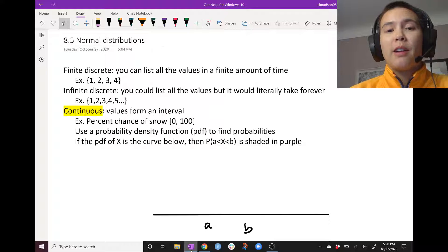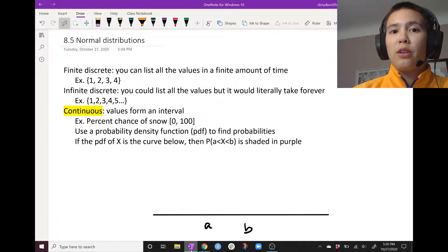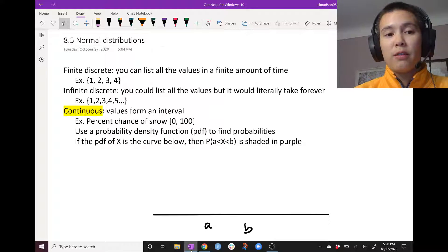So first remember that a random variable could be a discrete random variable or a continuous random variable. And a continuous random variable is a random variable that takes values in an interval, so you wouldn't be able to list off all the values. You would have to describe it with an interval or maybe a whole bunch of intervals.